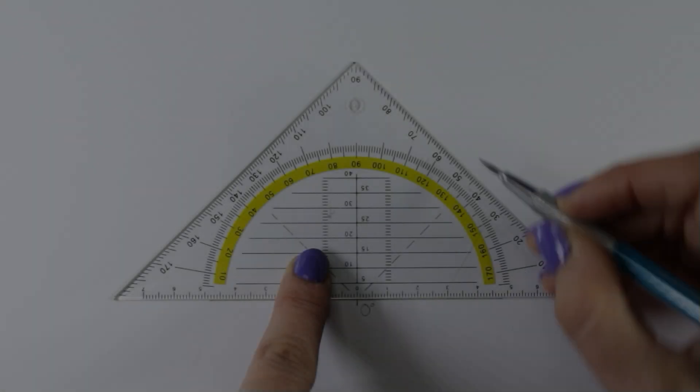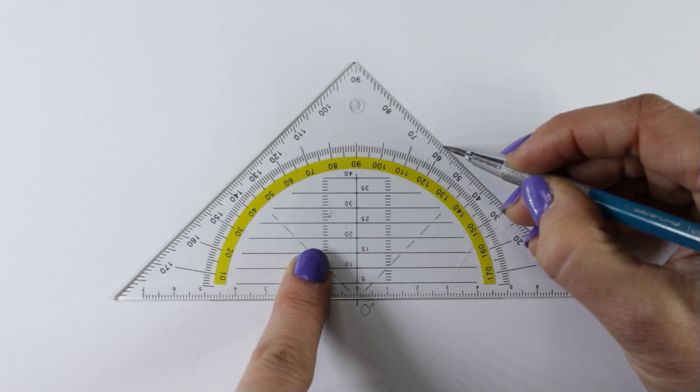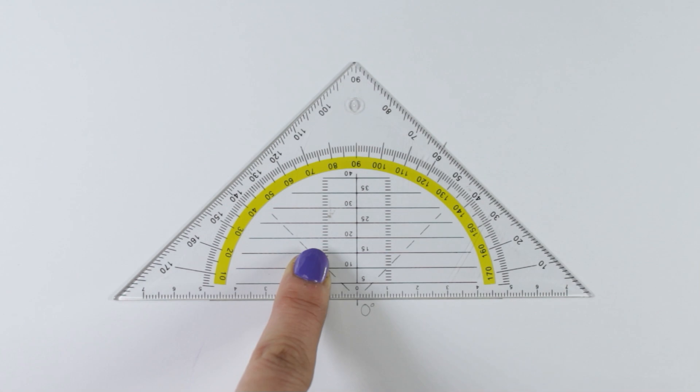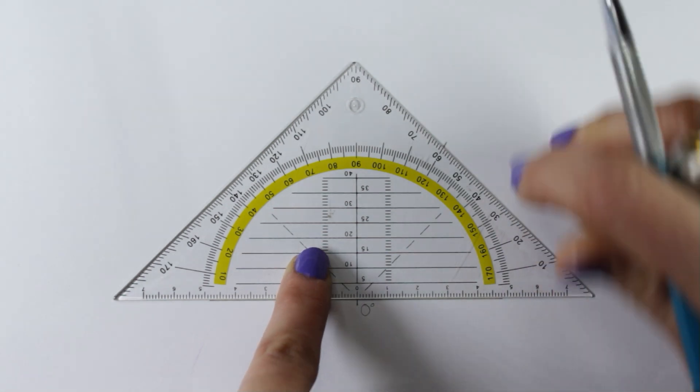Let's create a 60 degree angle. On this edge of the triangle, I make a mark at 60 degrees. Then, align it with the zero degree mark and draw a line.